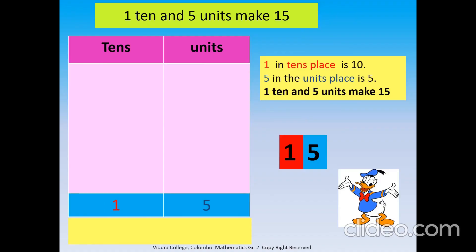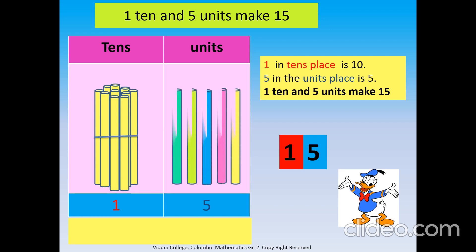Let's show number fifteen in the chart. One ten in tens column. Five units in units column. One in tens place is ten, five in units place is five. One ten and five units make fifteen.